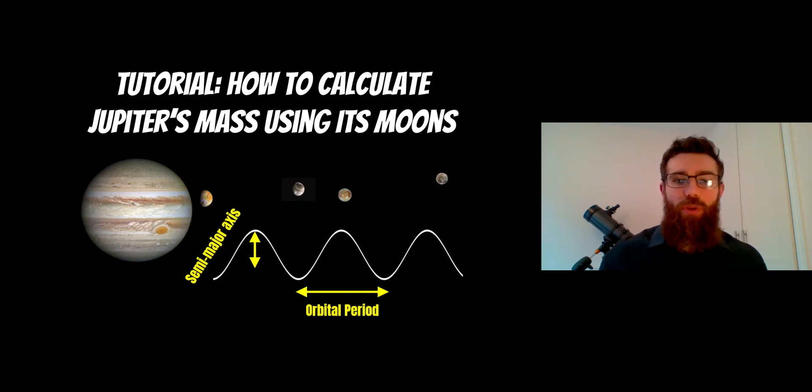Welcome to this video. What I want to show you here is how you can calculate the mass of Jupiter by using its moons and a small telescope, similar to the telescope I've got behind me. You can make observations of the moons orbiting Jupiter and work out the mass of our largest planet in the solar system.